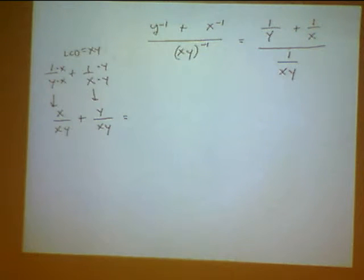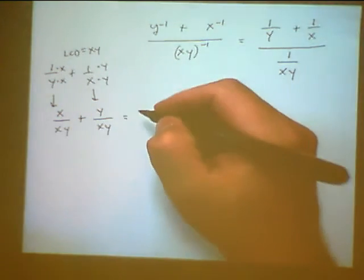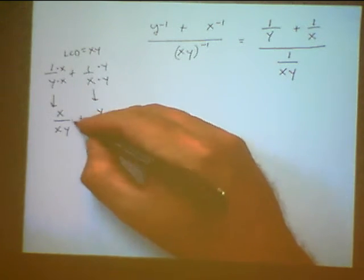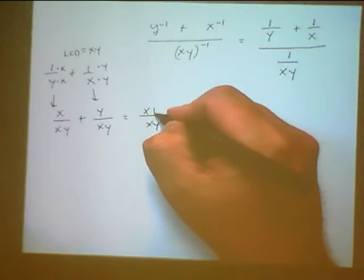And now we have two fractions with the same denominator. So we can now go ahead and add them. You write the common denominator, and then you add the numerators: x plus y.